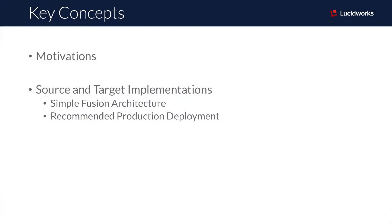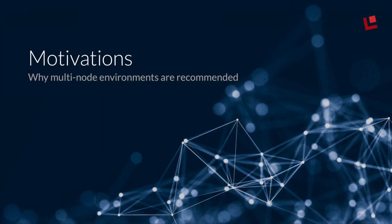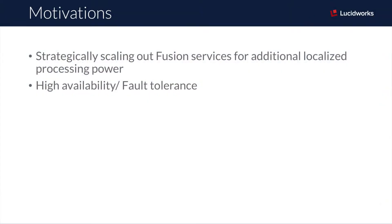Before I dig into the demonstration, I'd like to cover a few key concepts. Let's consider the motivations behind scaling out to a Fusion cluster. Fusion is highly scalable and you can take advantage of this by configuring your cluster with localized processing power — essentially dedicating specific servers to specific processing tasks. For instance, you can maximize query throughput by turning on the Solr and API processes on dedicated query nodes. Similarly, you can improve indexing throughput by distributing the connectors and API processes to dedicated ingestion nodes.